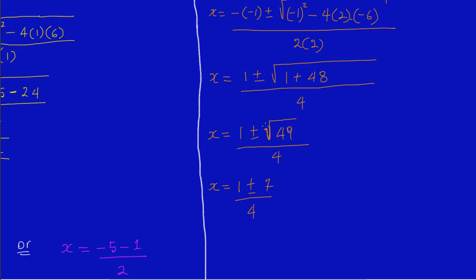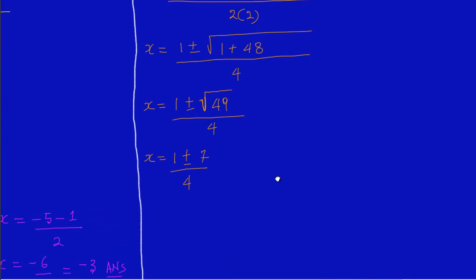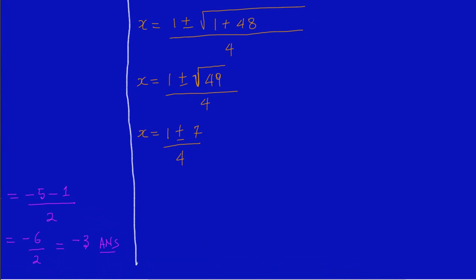Now, since we have gotten rid of our square root sign and simplified down, we're going to split the plus or minus into two separate cases. So x is equal to 1 plus 7, all over 4, or x is equal to 1 minus 7, all over 4.